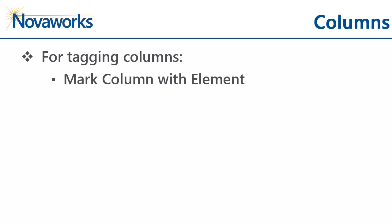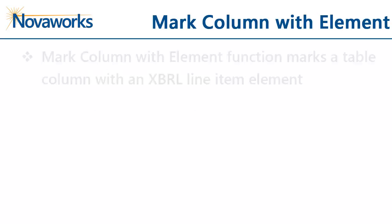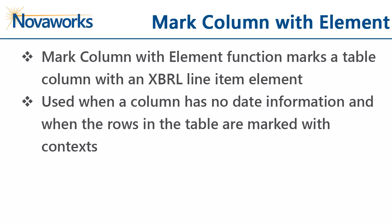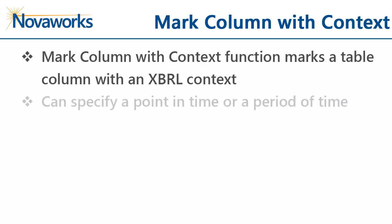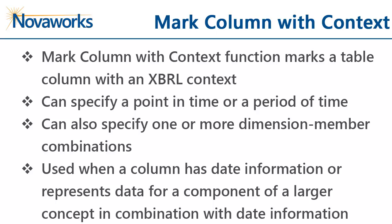For columns, there is the markColumnWithElement, markColumnWithContext, and markColumnWithDimension functions. The markColumnWithElement function will mark a table column with an XBRL line item element. This is used when a column has no date information and when the rows in the table are marked with a context. The markColumnWithContext function will mark a table column with an XBRL context. The context can specify a point in time or a period of time, as well as dimensions and member elements, and you can specify more than one dimension-member combination. This is used when a column has date information or represents data for a component of a larger concept with date information.